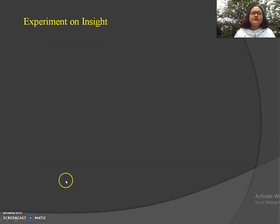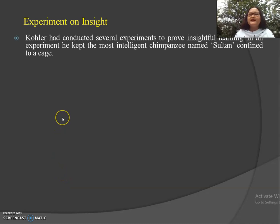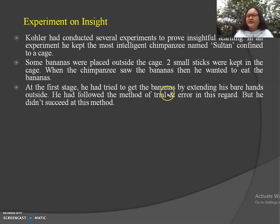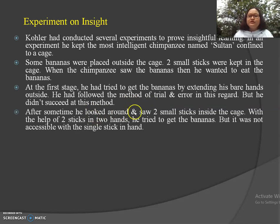Kohler conducted several experiments to prove insightful learning. In one experiment, he kept the most intelligent chimpanzee named Sultan confined to a cage. Some bananas were placed outside the cage and two small sticks were also kept inside. When Sultan saw the bananas, he wanted to eat them. At first, he tried to get the bananas by extending his bare hands outside, following the method of trial and error, but he didn't succeed. After some time, he looked around and saw the two small sticks inside the cage. With one stick in hand, he tried to get the bananas, but it was not accessible with a single stick.